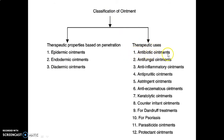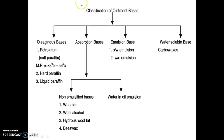Classification based on therapeutic uses includes antibiotic ointments, antifungal ointments, anti-inflammatory ointments, antipruritic ointments, astringent ointments, anti-eczematous ointments, keratolytic ointments, counter-irritant ointments, ointments for dandruff treatment, for psoriasis, parasiticide ointments, and protectant ointments.